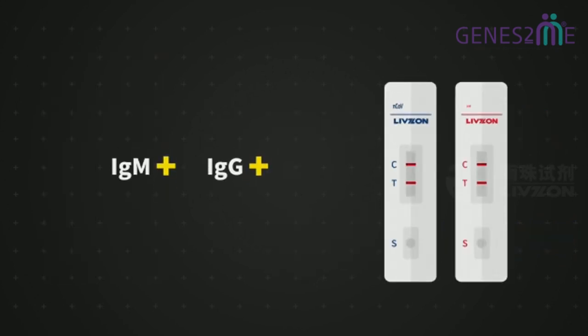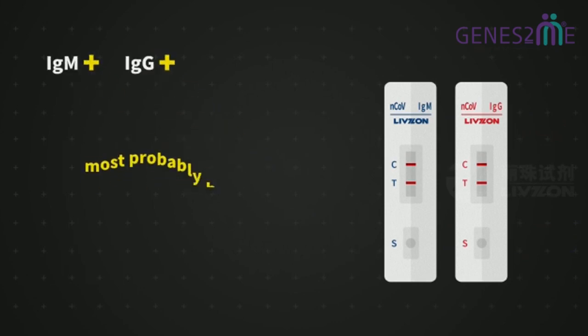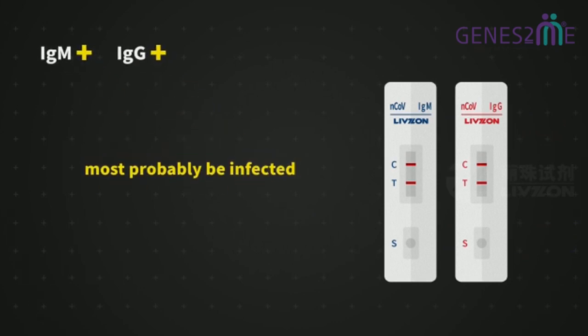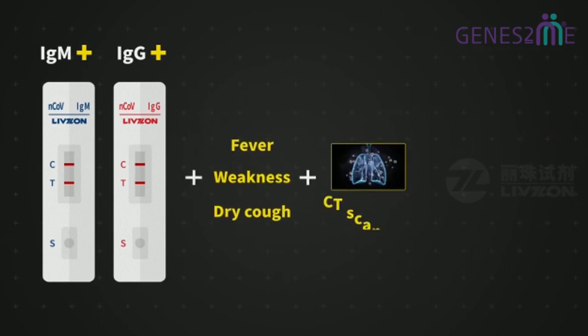When IgM and IgG are both positive, the patient is most probably be infected with the virus. Combined with symptoms and CT scanning, one can be confirmed as COVID-19 case.